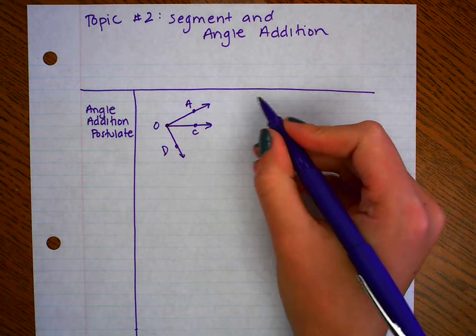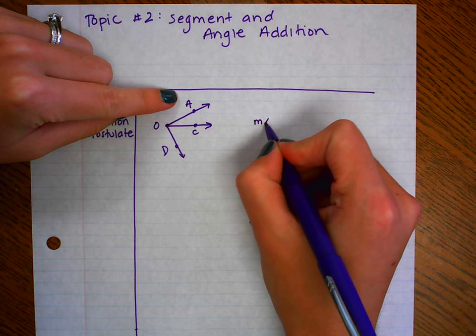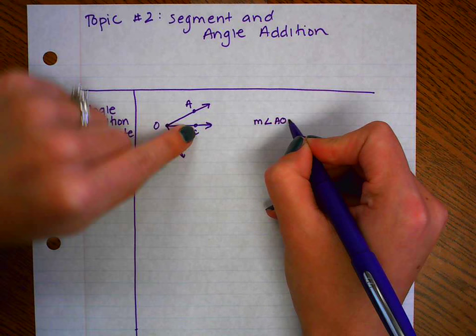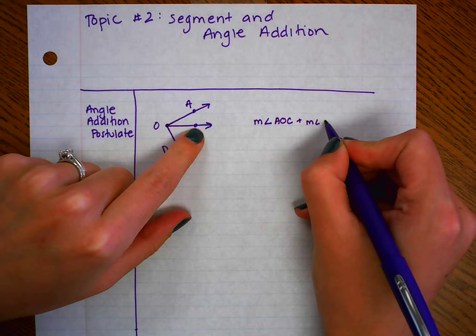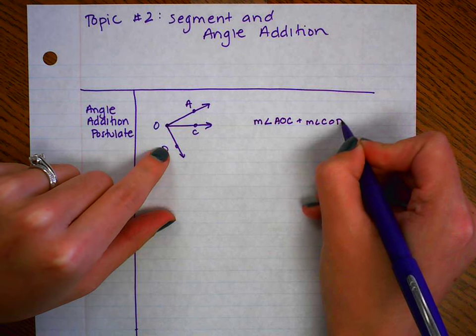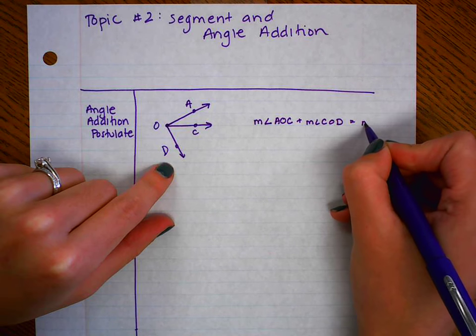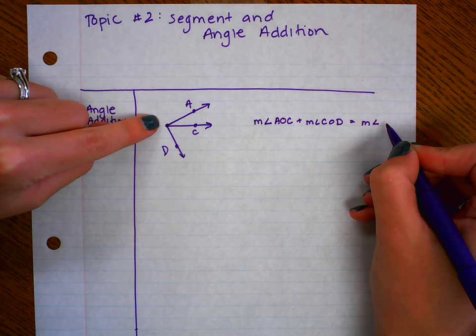So the angle addition postulate would say that the measure of angle AOC plus the measure of angle COD is equal to the measure of the whole thing, angle AOD.